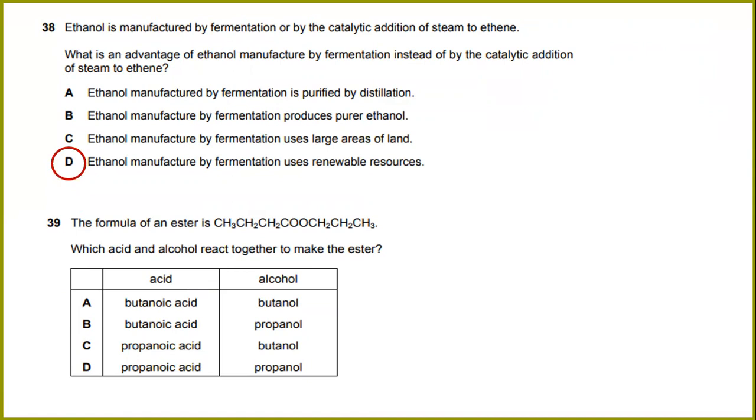The formula of an ester is CH3CH2CH2CH2CH2COOCH2CH3. Which acid and alcohol react together to make the ester? It comes from glutanoic acid and propanol.